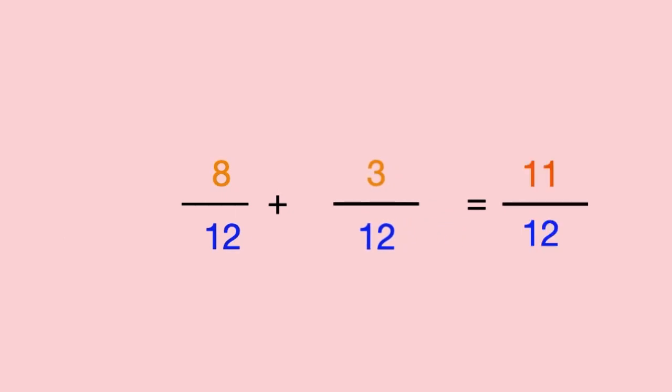For our numerator, we have to add 8 and 3 together. This means we get the answer 11 twelfths.